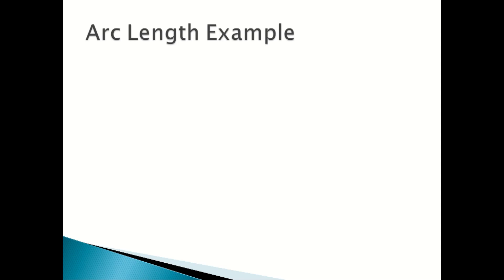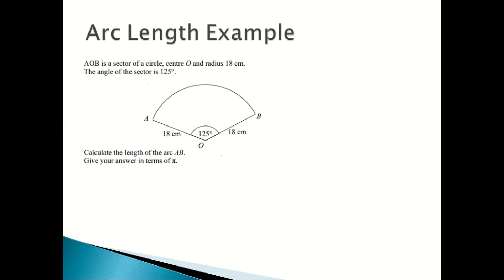Arc length example. Here is an example exam question. AOB is a sector of a circle, centre O and radius 18 centimetres. The angle of the sector is 125 degrees. Calculate the length of the arc AB. Give your answer in terms of pi.